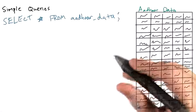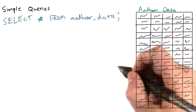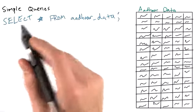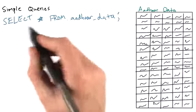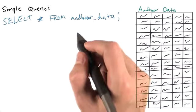If we wanted to do that, we could type something like SELECT * FROM aadhaar_data. Note that the SQL syntax is pretty human readable. We're just saying we want to select star, or everything, from the aadhaar_data table.